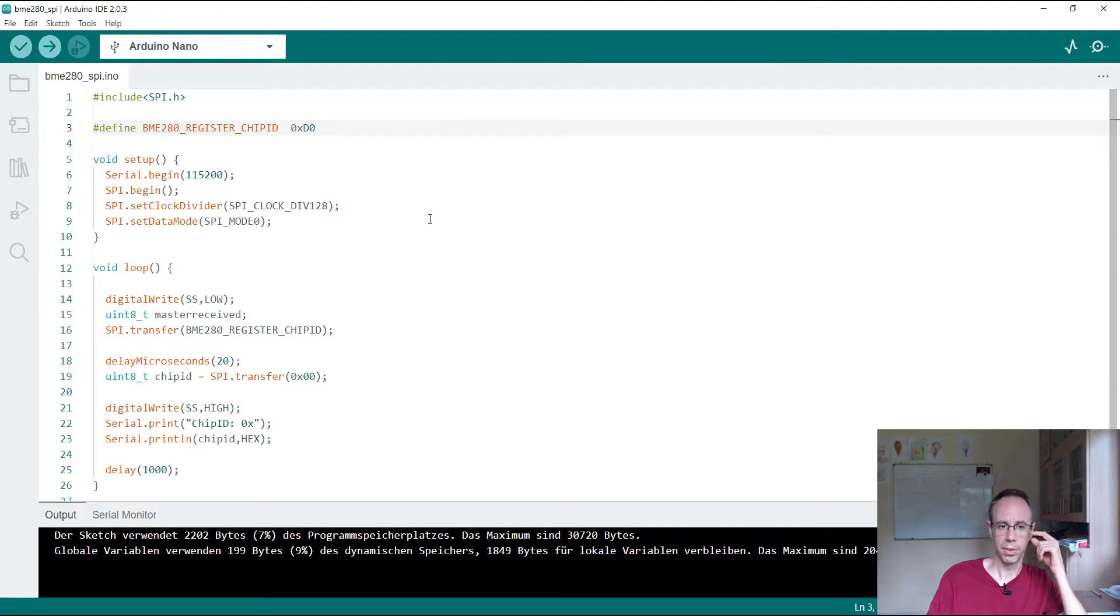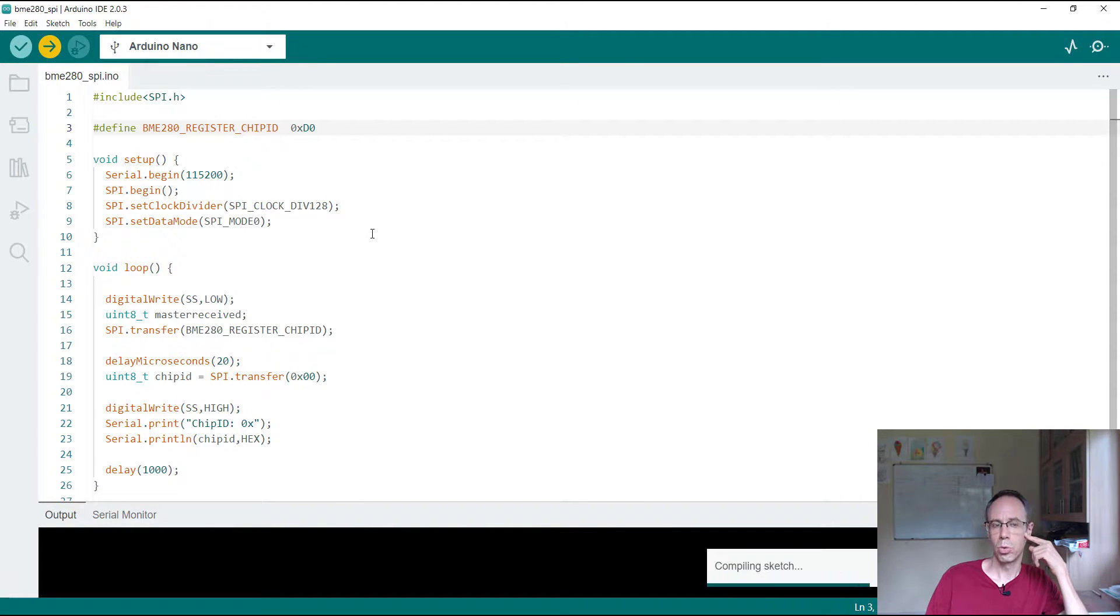Then in the loop we are just setting the chip signal low. Then I transfer our first byte, the register from the chip ID. Then I wait short, also for the logic analyzer that I get a better signal, and then I transfer a dummy data - I just transfer zero because the peripheral needs a clock signal to transfer also something. Afterwards I'm setting the chip select high again. When I transfer this to the Arduino Nano...